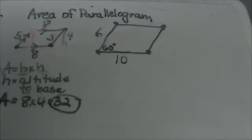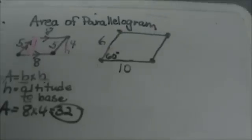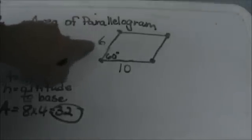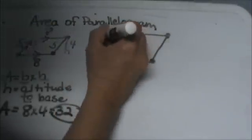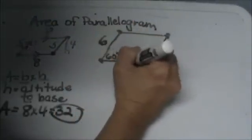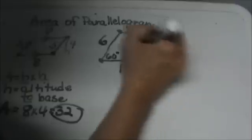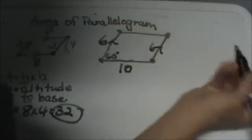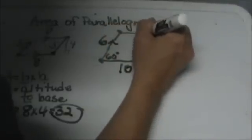Let's take it a step further and look at one that is a little more involved. Let's say you have a parallelogram and one side is 6 and one side is 10. So we can label this opposite side 6 and this opposite side 10.